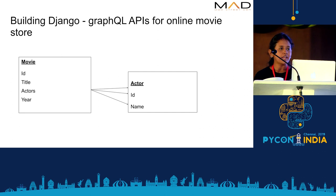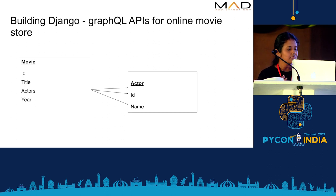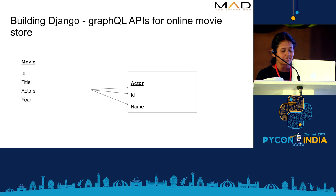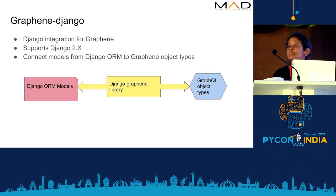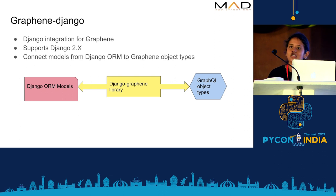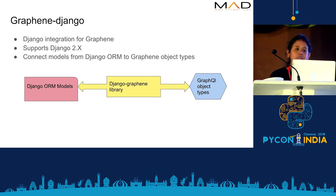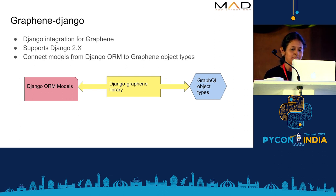Now let's look at building a Django GraphQL API for an online movie store — a simple use case with just two tables: a Movie table and an Actor table, related with a one-to-many relationship (a movie can have more than one actor). For this, we use an off-the-shelf library called Graphene Django, which provides a lot of features for developing a GraphQL API on top of Django. It supports Django 2 and above, and connects Django ORM models to Graphene object types, making it easy to get your server up and running.